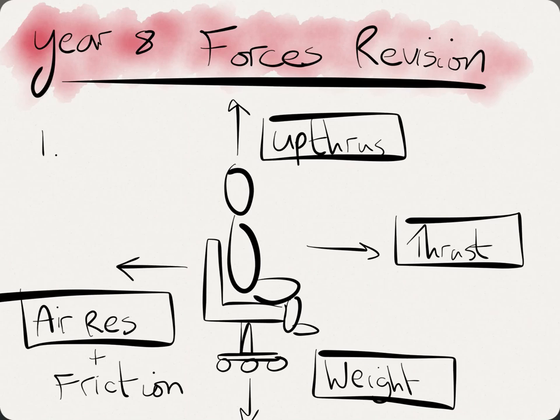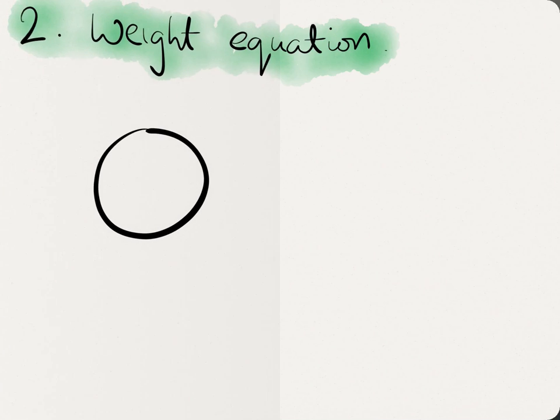So, Newton was a smart chap. He said you could show these invisible forces with arrows. Now, arrows can tell you two things. We have a little one and we'll have a big arrow. So, can you write down now, and press pause, what two things do arrows tell you?